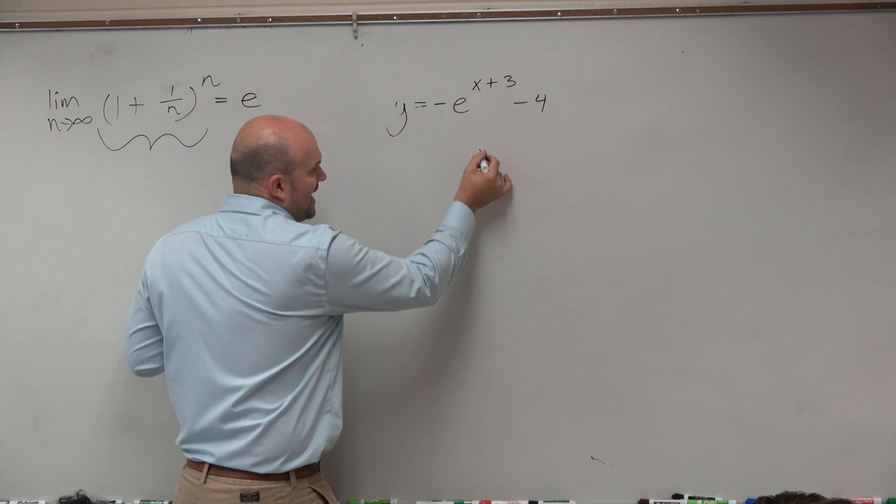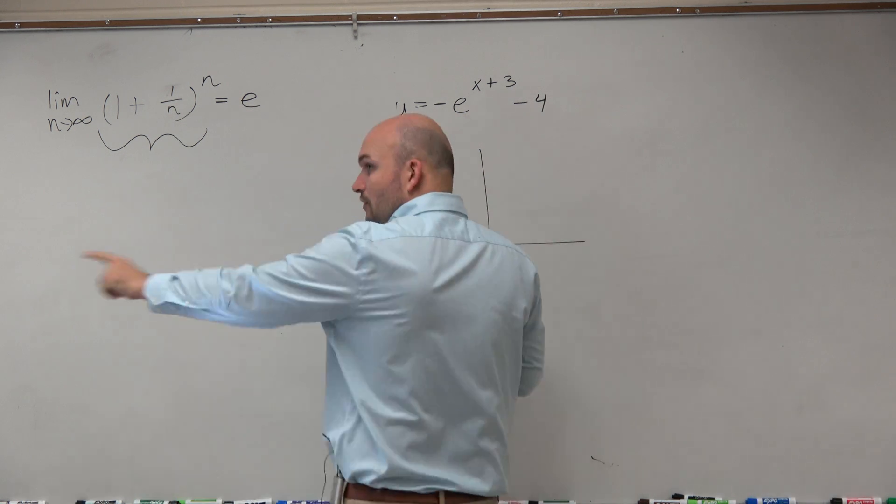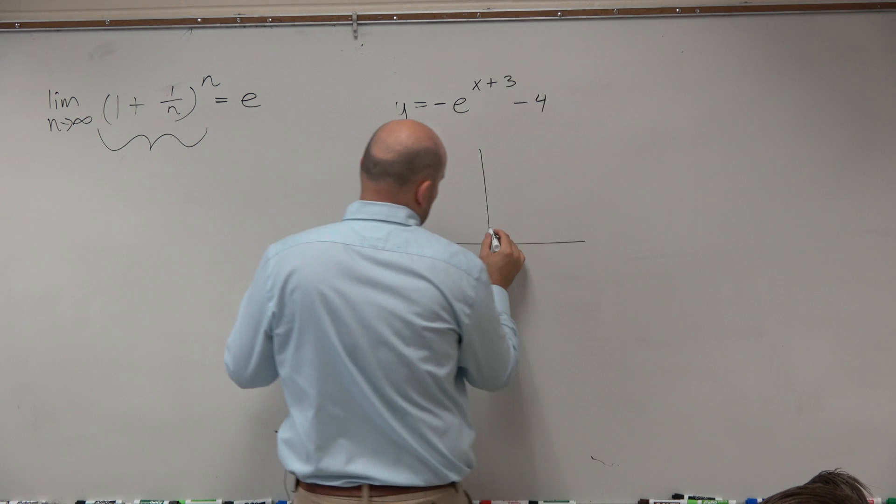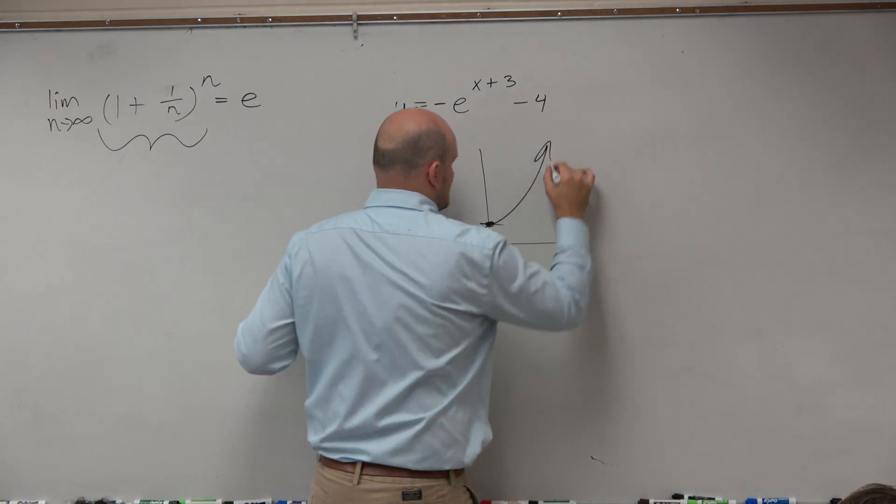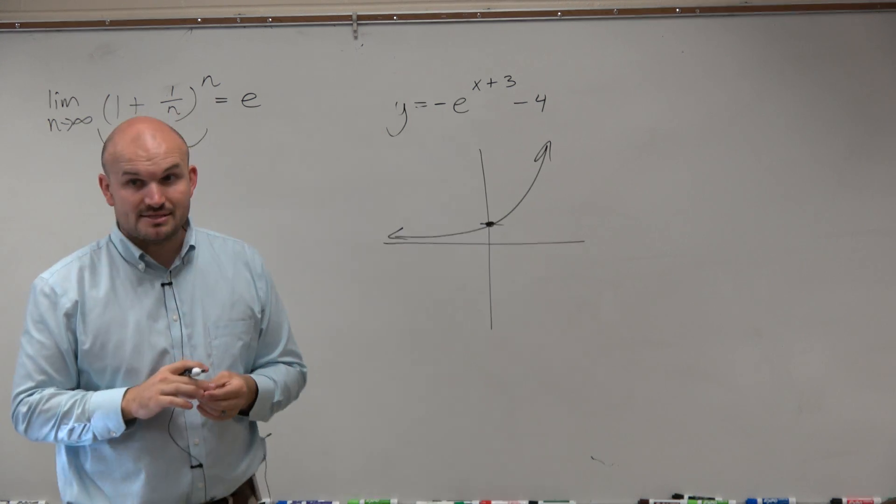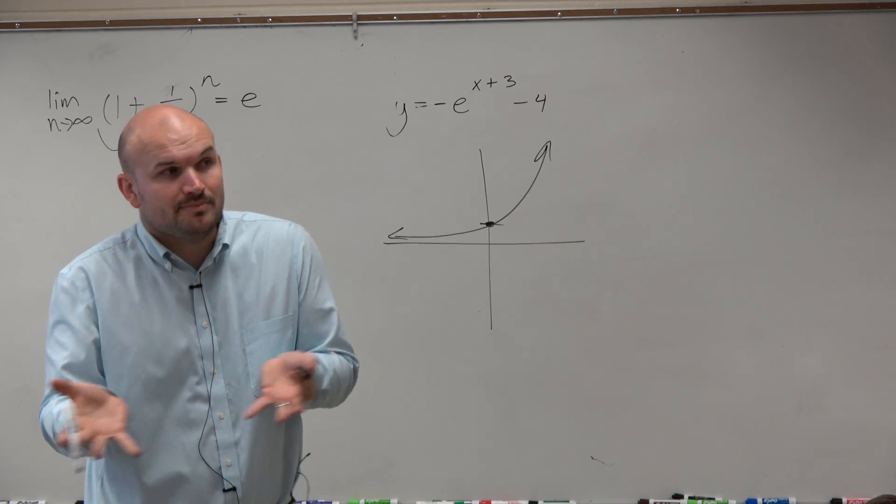And as we look at these graphs, we know that the basic form of e here is still going to have a y-intercept at 1, and it's going to look something like this. So now, all we've got to do is apply our transformations.